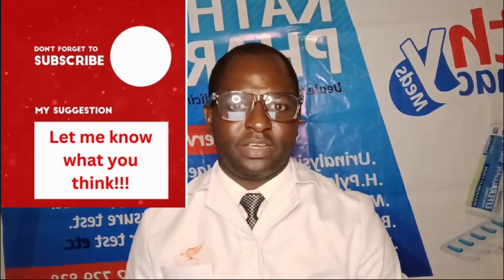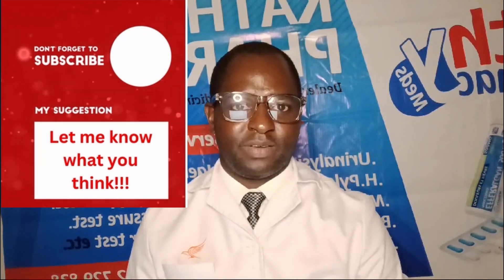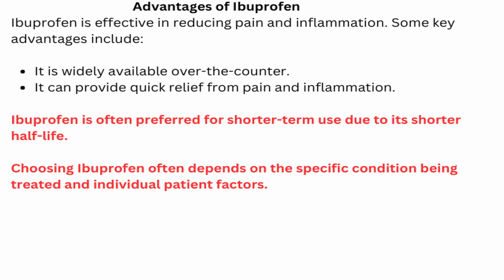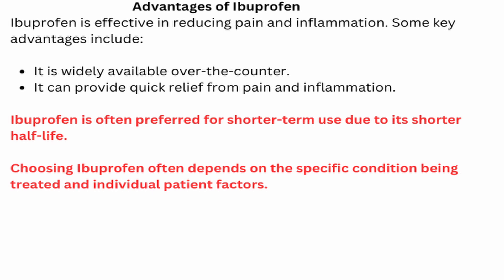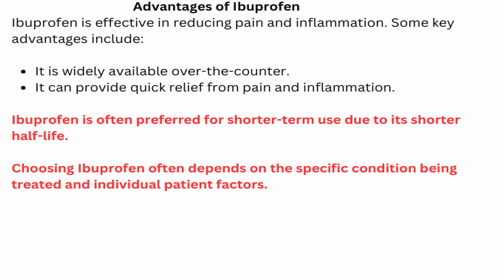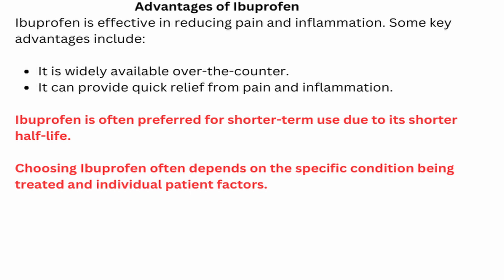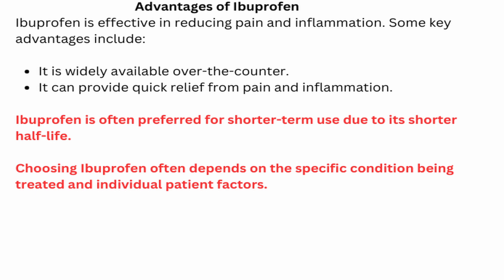The advantages of ibuprofen include that it is widely available over the counter in low doses — higher doses require a valid prescription. It can provide quick relief from pain and inflammation. Ibuprofen is often preferred for shorter-term use due to its shorter half-life. Choosing ibuprofen often depends on the specific condition being treated and individual patient factors, so your doctor will advise you accordingly.